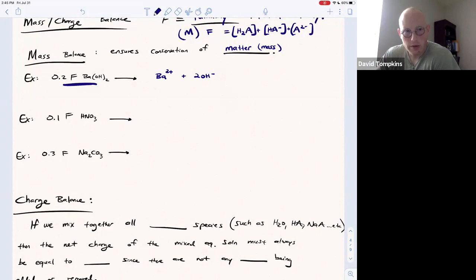And so what we would see is that at equilibrium, the amount of barium times two would be the amount of hydroxide. Okay, or there are two hydroxides for every one barium. In other words, the amount of hydroxide is twice or two times the amount of barium.